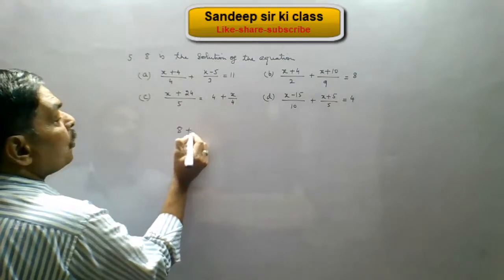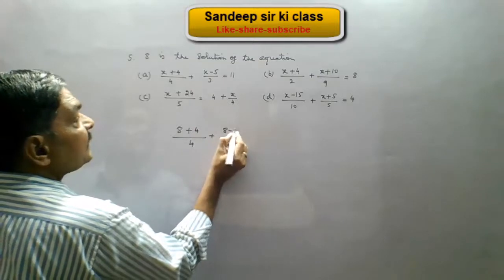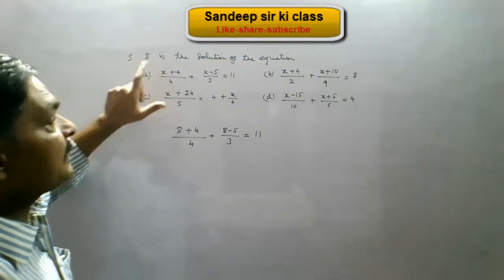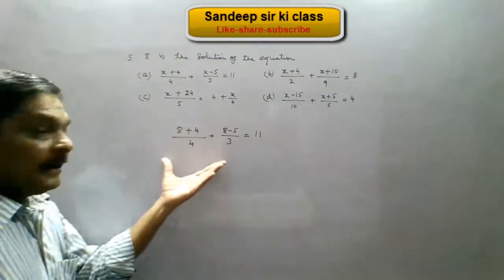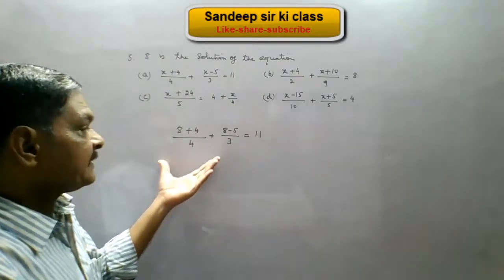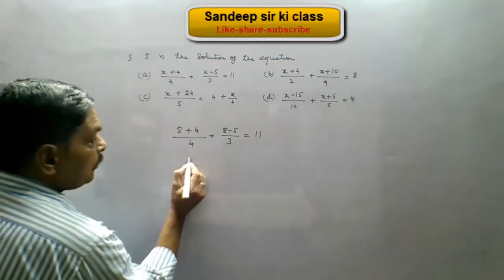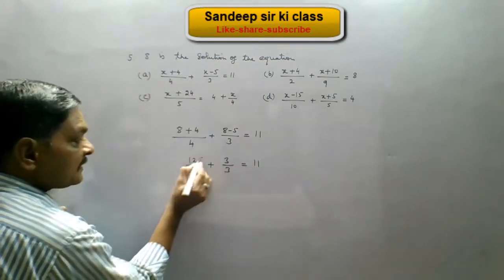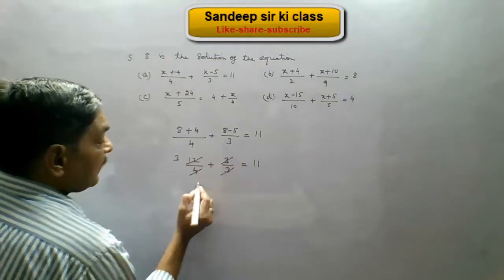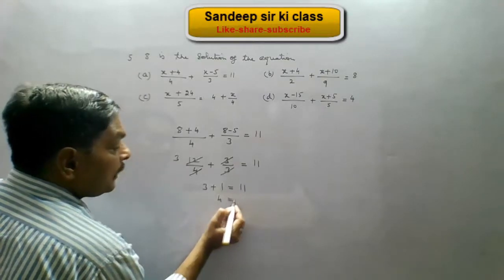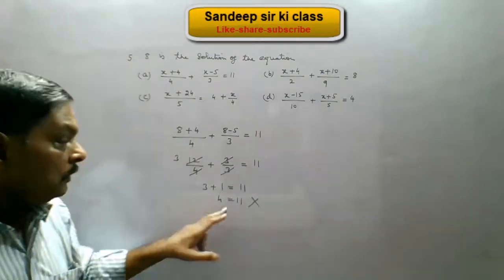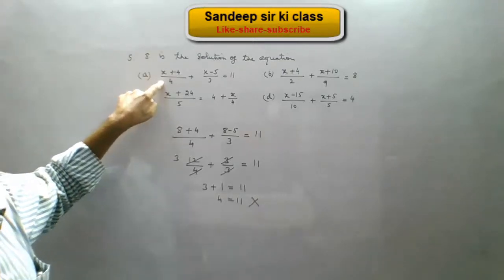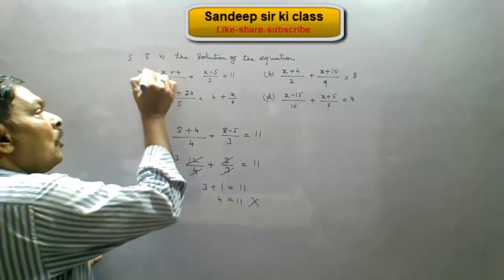For option A, substituting x equals 8: (8 plus 4) upon 4 plus (8 minus 5) upon 3 equals 11. This gives 12 upon 4 plus 3 upon 3 equals 11. Since 12 divided by 4 is 3 and 3 divided by 3 is 1, we get 3 plus 1 equals 11, meaning 4 equals 11, which is wrong. So 8 is not the solution of the equation in option A, and option A is incorrect.